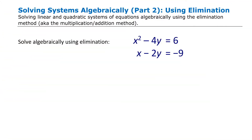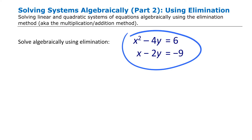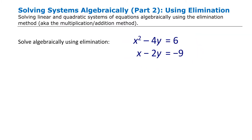The elimination method is sometimes called the multiplication-addition method, which is probably a better name for it. The central concept is that you take your two equations and combine them by adding so that you eliminate a variable. Sometimes you need to multiply one or both equations before adding to eliminate a variable.